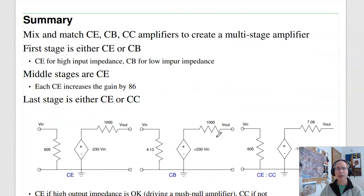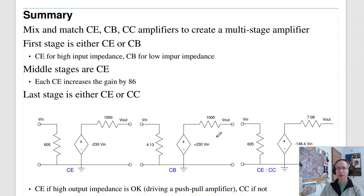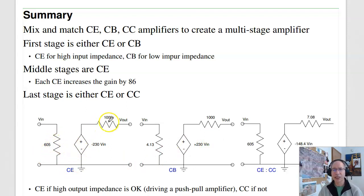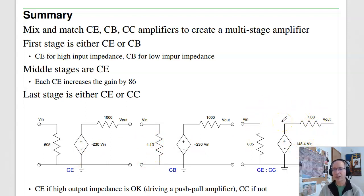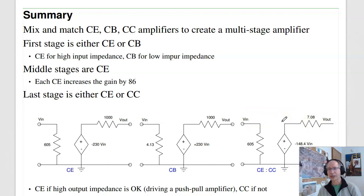In summary, with multi-stage amplifiers you've got a few building blocks: common emitter is your bread-and-butter amplifier — fairly high input impedance, fairly high output impedance, high gain; common base has low input impedance; common collector has low output impedance. By cascading these together, you can build an amplifier that takes a small signal and amplifies it to drive an 8-ohm speaker. That's lecture number 16 for ECE 321 analog electronics.